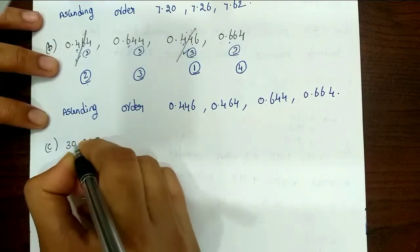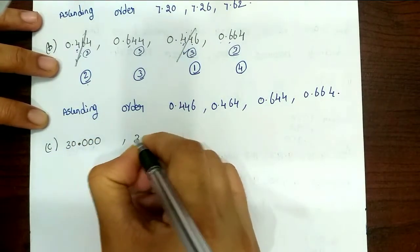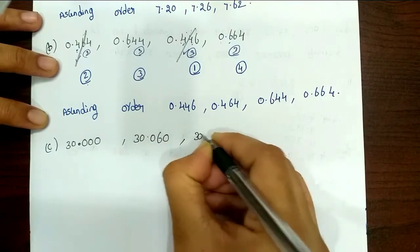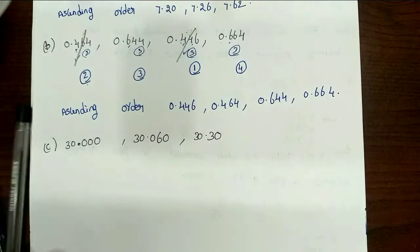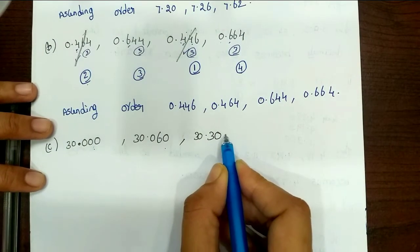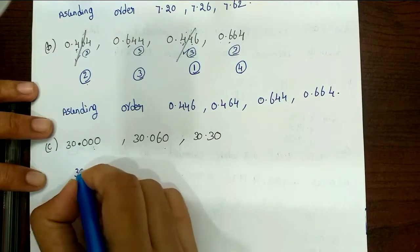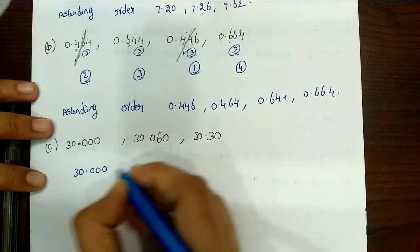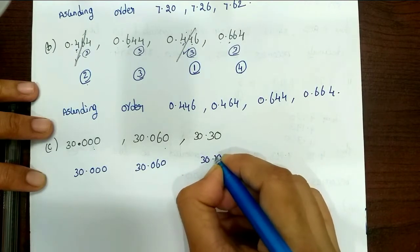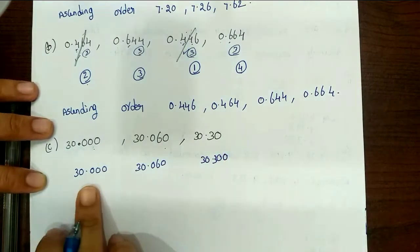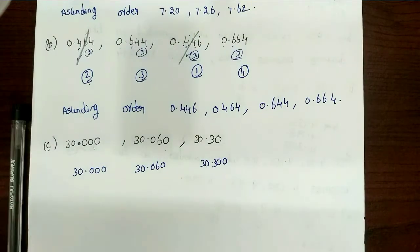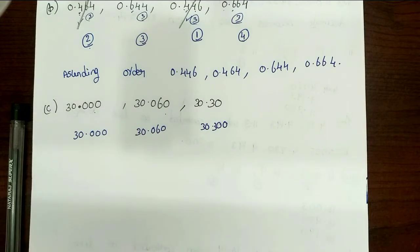Third set of numbers: 30.000, 30.060, and 30.30. Here after the decimal point, digits are 3, 3, 3 — all equal. Next digit: 0, 0, 3. So 0 is smallest. But two numbers have 0 here, so check next digit.